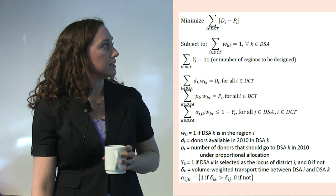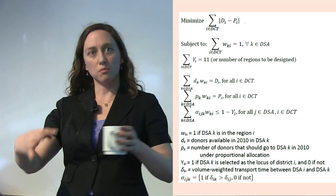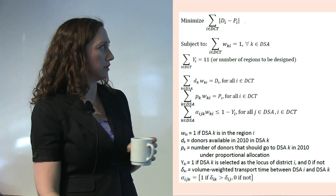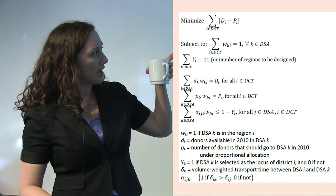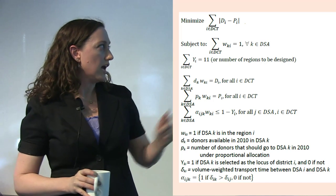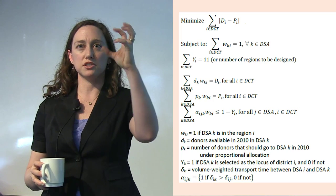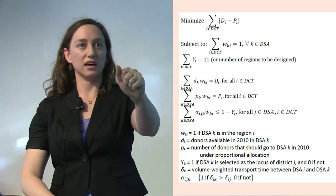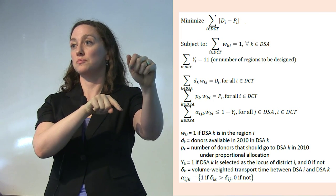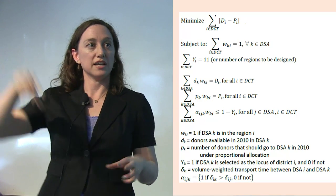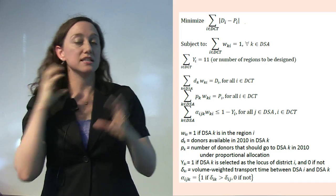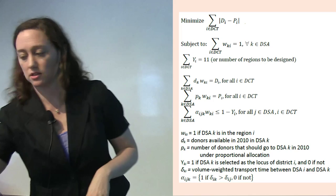The second constraint says how many regions to design — there are 11 right now, and I've been working with the liver committee of the Organ Procurement and Transplantation Network. They've decided they want fewer, maybe eight or as few as four. The last constraint is a technical one that makes regions compact: I pick a center for each region, and every other DSA is assigned to the region whose center it is closest to. That way I get regions stacked close together — I wouldn't want to combine places across the country into the same region.